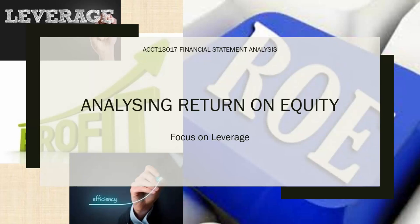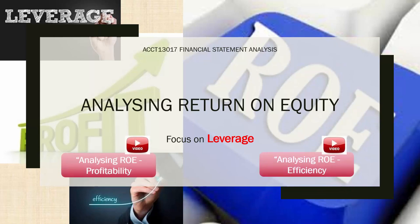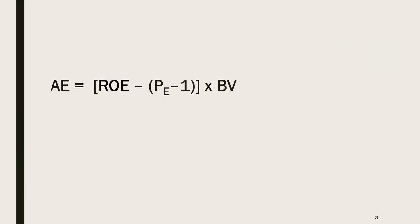If you are wondering how to analyze return on equity, this video will look at the leverage accounting drivers of return on equity. Two other videos look at the profitability and efficiency accounting drivers. As we have seen, abnormal earnings AE equals return on equity minus the cost of equity (roe) minus 1, all times book value of equity.